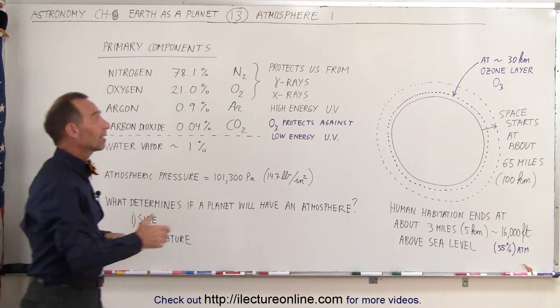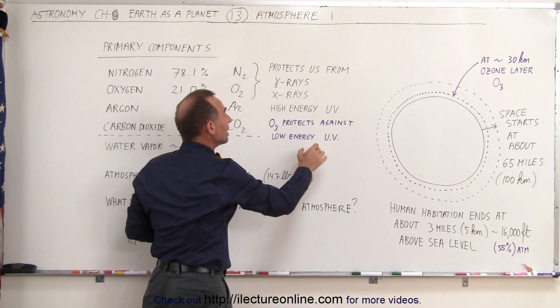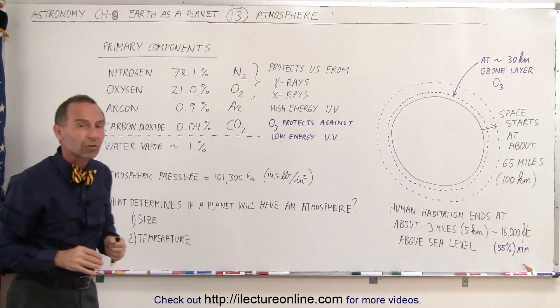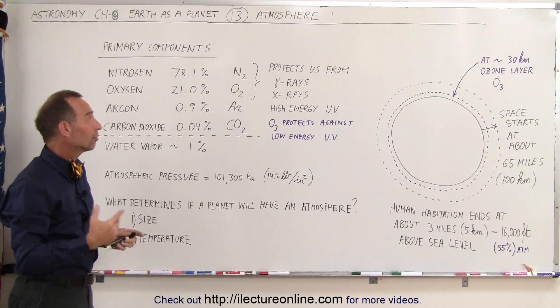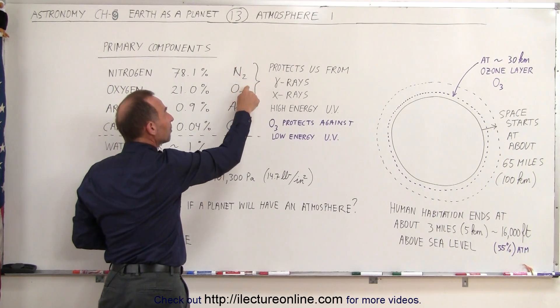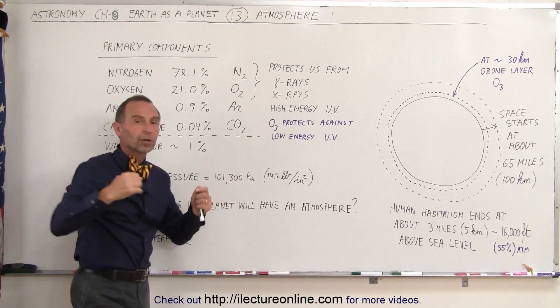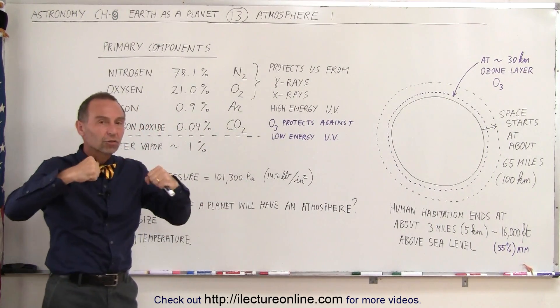We need protection from the harmful rays that come from space. The most harmful rays that come from space are gamma rays, X-rays, and high-energy UV. Even the low-energy UV can be quite detrimental to our survival unless we were protected from those rays. It turns out that nitrogen and oxygen, since they're diatomic molecules, a nitrogen molecule is two nitrogens joined together, an oxygen molecule is two oxygens joined together.